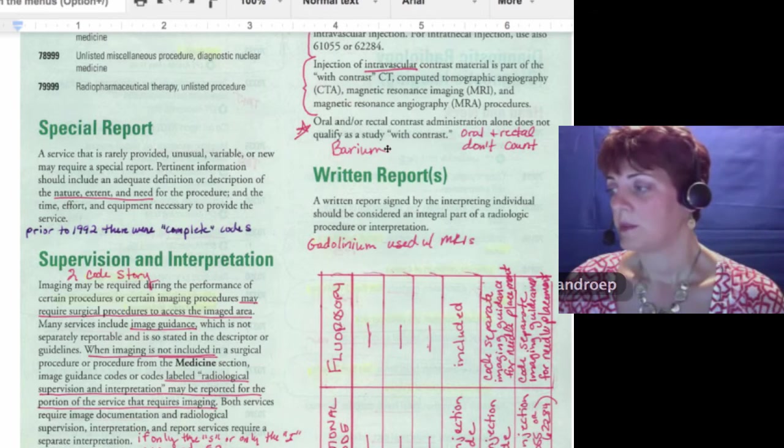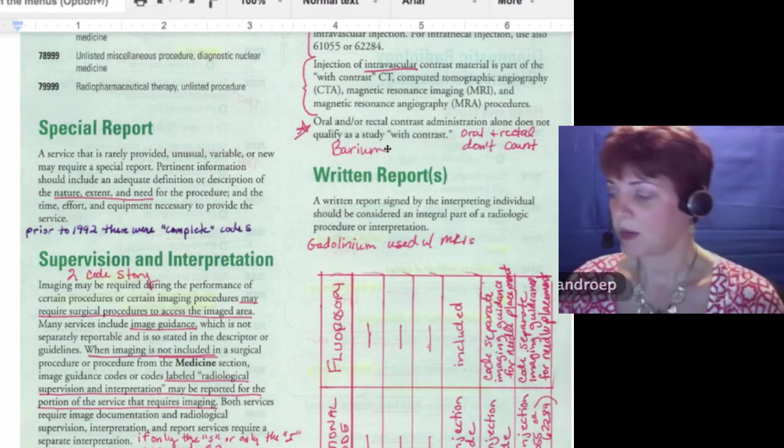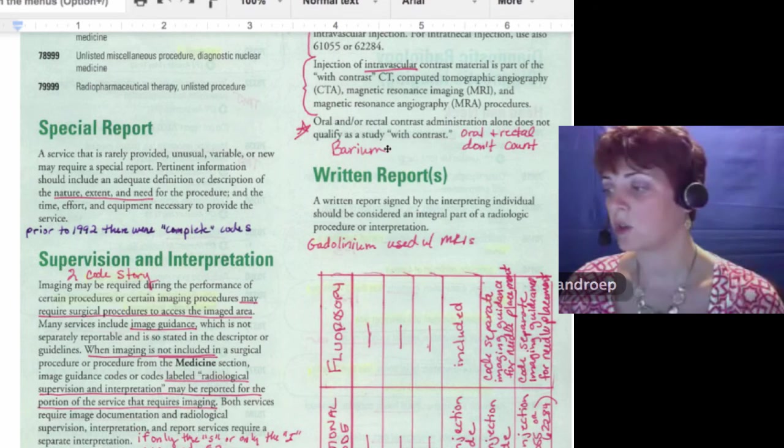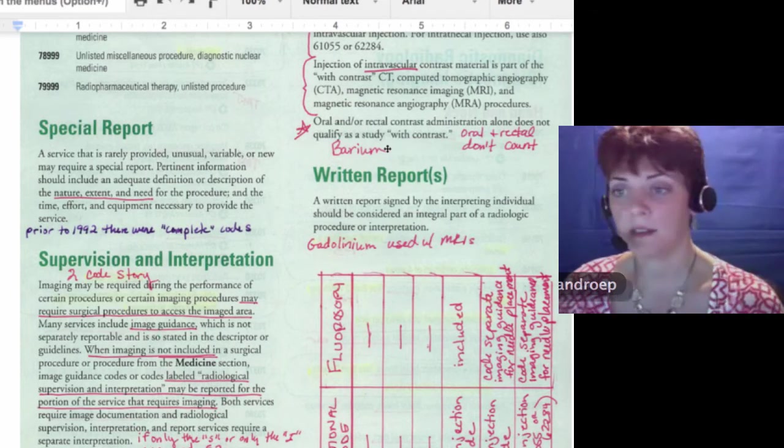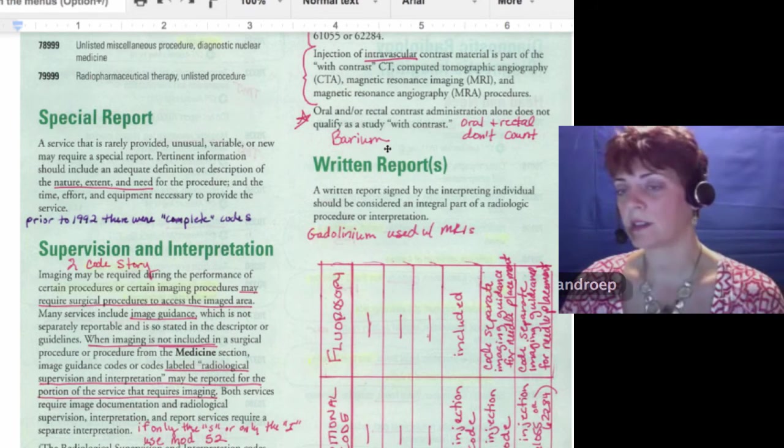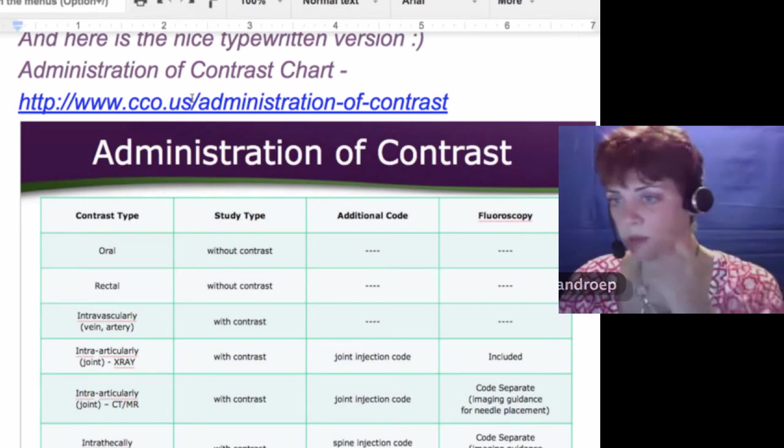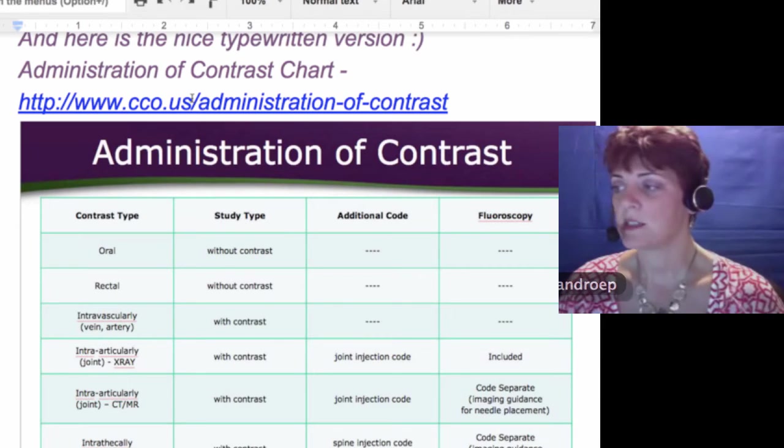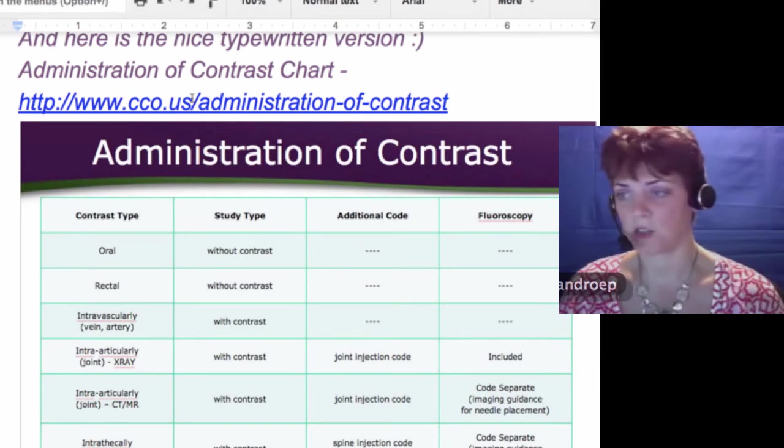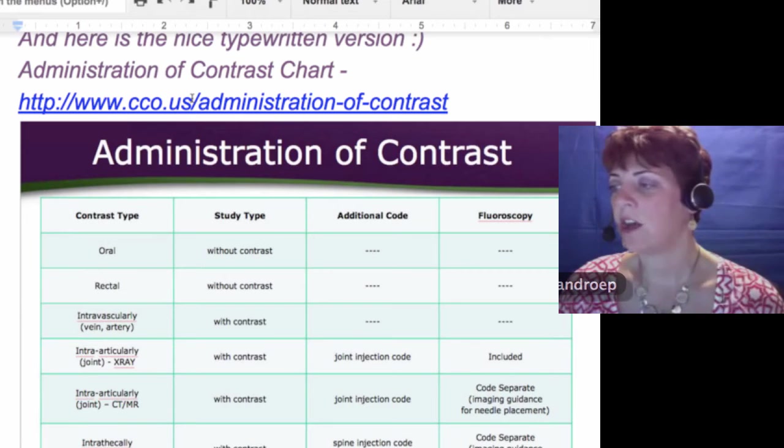Alright, so this is the chart. I know it's tipped sideways, so I'm going to scroll down and show you one that I printed up. You can get this link and we'll have it in the slides at the end, but if someone wants to paste that into the chat, it's cco.us slash administration dash of dash contrast. And I took all that wah, wah, wah paragraphs and I just did it this way.